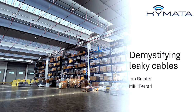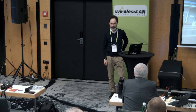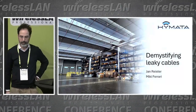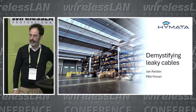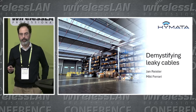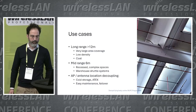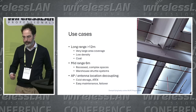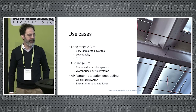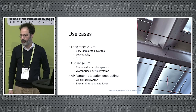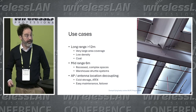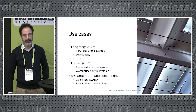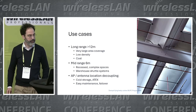I'm going to talk about leaky cables done right in 2024 for Wi-Fi. This is a journey started with co-presenter Miki Ferrari. We will analyze leaky cable Wi-Fi networks to assess performance issues and problems, focusing on industrial logistics use cases where the distance between antennas and end clients is quite large — 12 meters and more — with requirements of large area coverage, low client density, low application requirements, and cost as a major constraint.